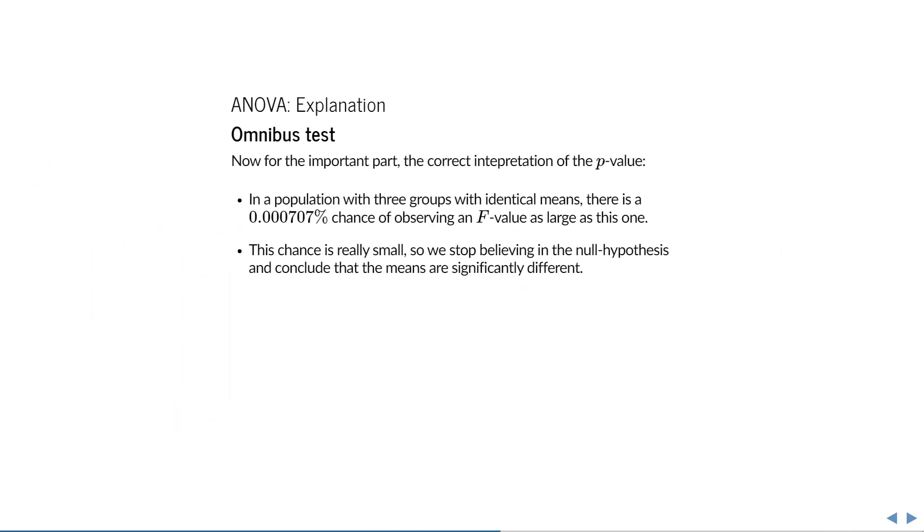So what does that value mean? In a population with three groups that have identical means, there is a 0.0007% chance of drawing a sample that results in an f-value as large as this one. Since this chance is extremely small, we stop believing in the null hypothesis and conclude a significant difference in group means.